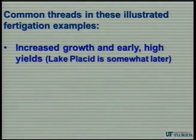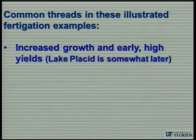The common threads illustrated by those slides: increased growth and early high yields are possible. The Lake Placid grove is slightly behind on certain rootstocks — rough lemon is not as precocious as others, so great vegetative growth but not much yield yet. But the C35 and X639 rootstocks are doing much better. Increased water and nutrient use efficiency has been proven over and over again — it's a great advantage, you save yourself some money.